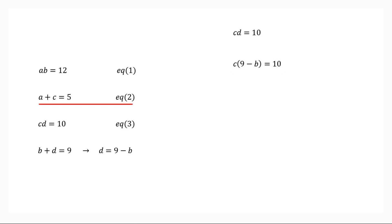Come back to equation 2 then we get C equals 5 minus A. So we can write 5 minus A into 9 minus B equals 10. From equation 1, A equals 12 over B. So 5 minus 12 over B into 9 minus B equals 10.